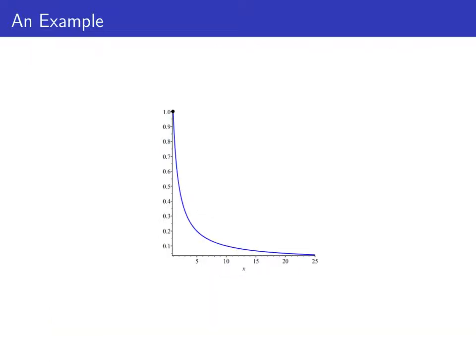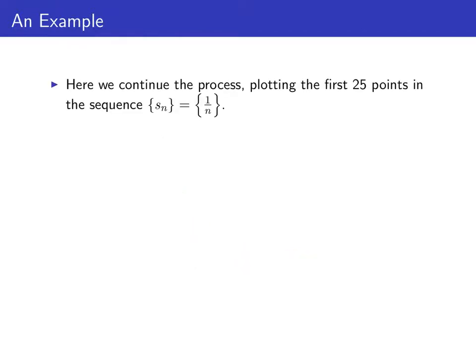Here's the first point, (1, 1). This is the second point, (2, one half). Now (3, one third). Then (4, one quarter). And we have (5, one fifth). And you can probably see the process.